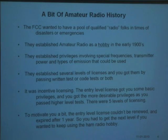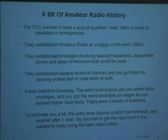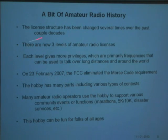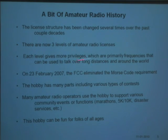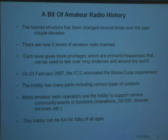There were several levels of classes — it was an incentive licensing system. When I got my license back in 1957, that license was only good for one year. If I wanted to stay a ham radio operator, I'd have to get the next level of license. That's all gone away now. They've restructured this several times over the last several years, but right now there are only three levels of licenses, and you're here to get the first level. The FCC also eliminated Morse code — back in the old days you had to do Morse code to get these licenses, but now there's no more Morse code.